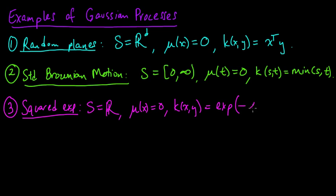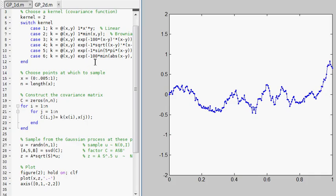So S is the real numbers. The mean is 0, like we have been taking all along. And the covariance function is e to the minus alpha times the difference between x and y squared. And this is for some alpha positive. Alpha controls sort of, well, you'll see what it controls. Maybe I'll show you actually here. Okay,